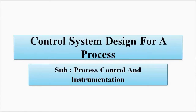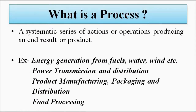Here we'll discuss the basic things related to the design of a control loop or process control loop for a specific process to achieve a certain objective. A process is basically a number of operations — a systematic series of operations or actions happening either simultaneously or one after another — that gives us an end product or end result. Examples of processes include energy generation from fuels, water, wind, power transmission and distribution, product manufacturing, food processing, etc.